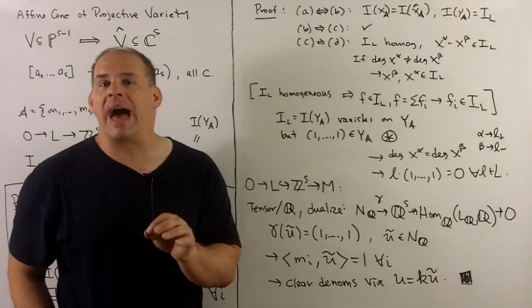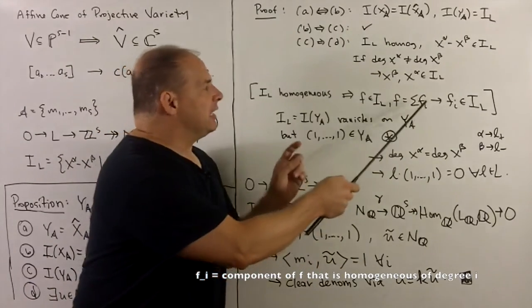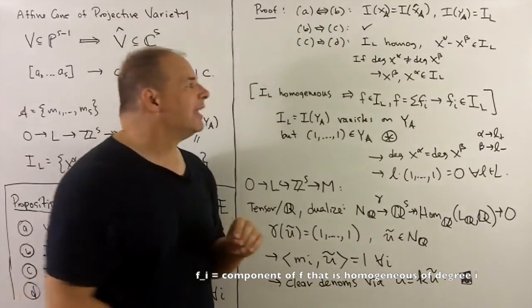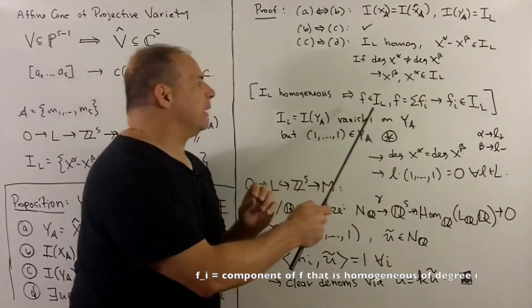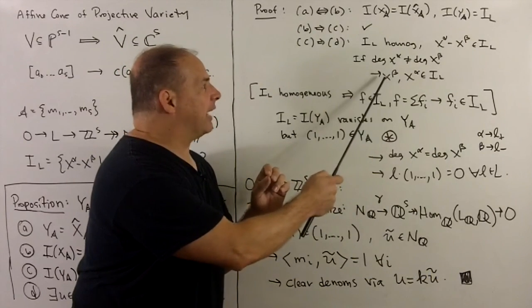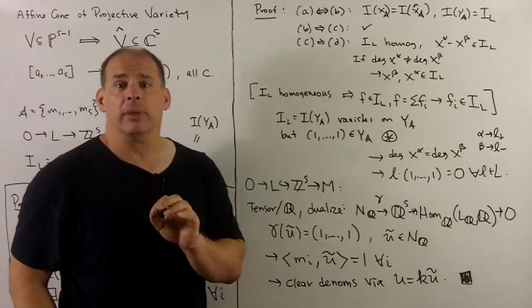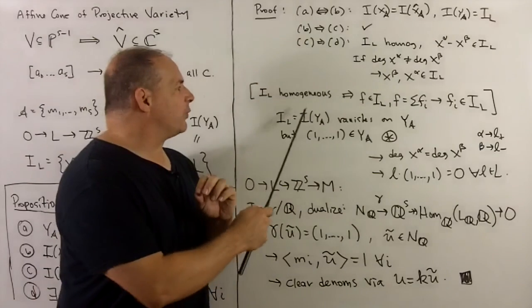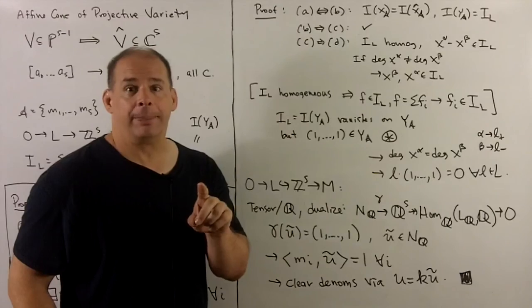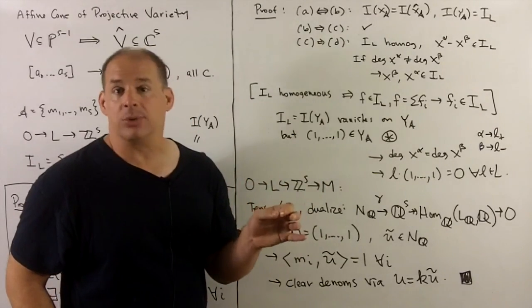There's a result about homogeneous ideals that says if you take any element in the homogeneous ideal, decompose according to degree, each component also has to be in the homogeneous ideal. So if these degrees are different, then x-alpha and x-beta have to be in the toric ideal, and that gives a contradiction. Because we know the toric ideal is the ideal for y sub a, but if we put (1,1,...,1), which is in y sub a, into x-alpha or x-beta, then we get 1, which is not equal to 0. So, contradiction.